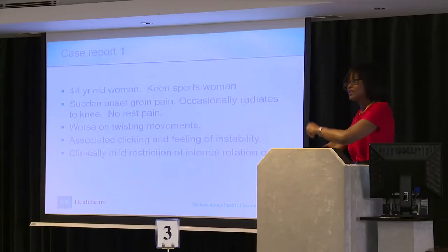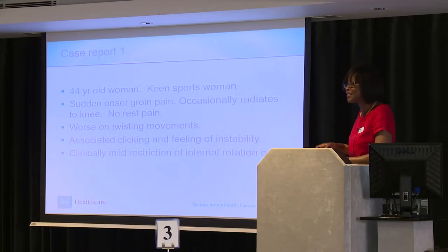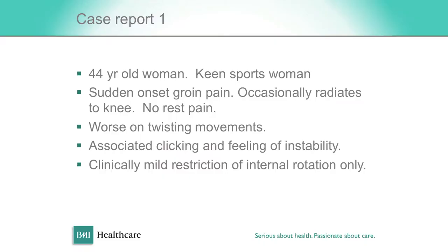So that was a quick overview. I've prepared a couple of case studies. The first patient is a 44-year-old lady, a keen sportswoman. She had a sudden onset of groin pain and was complaining of intermittent knee pain. She had no pain at rest, only on activity — particularly on twisting movements. There was an associated clicking and feeling of instability. On clinical examination there wasn't much to see, just mild loss of internal rotation. What are the differential diagnoses?